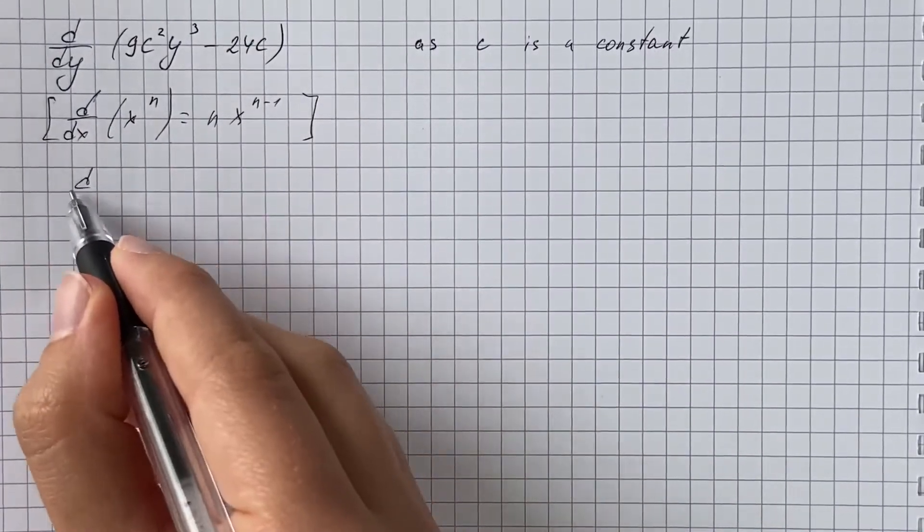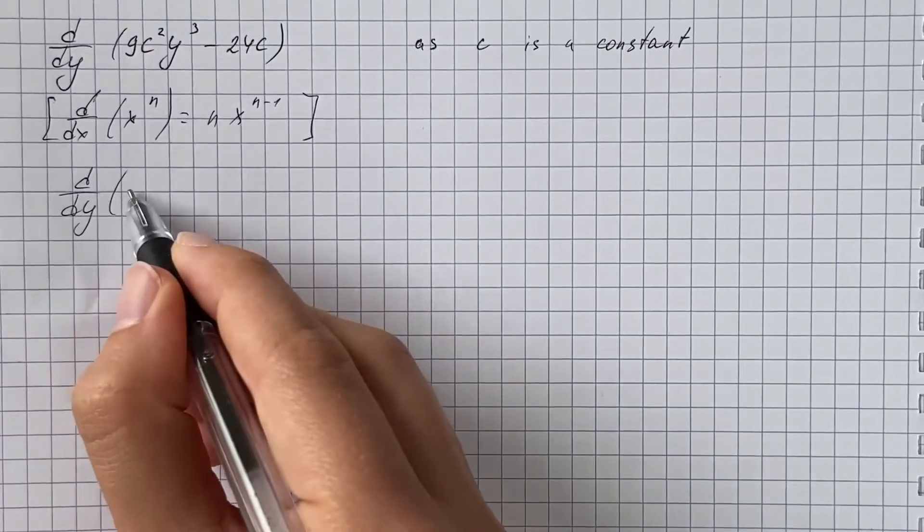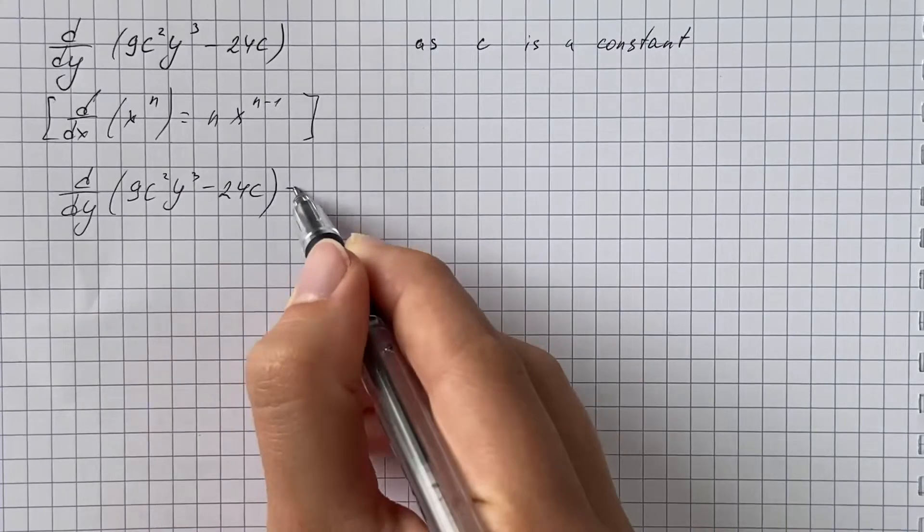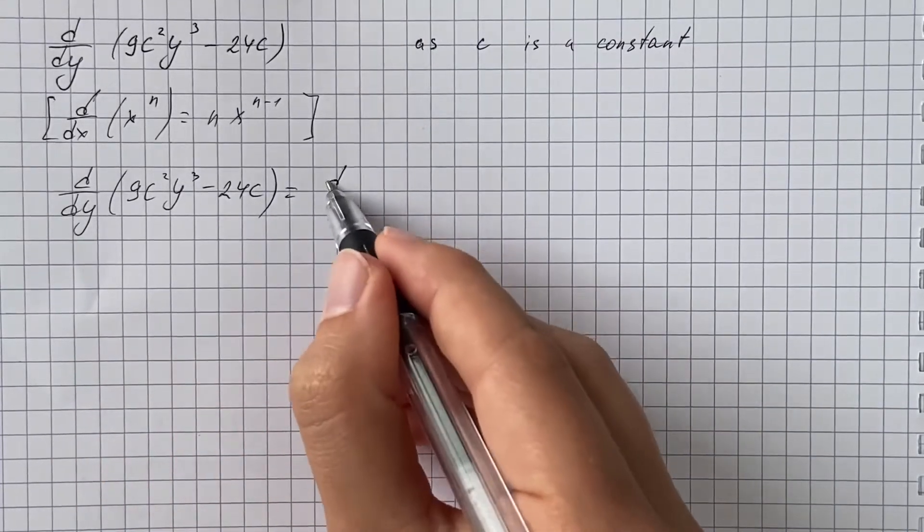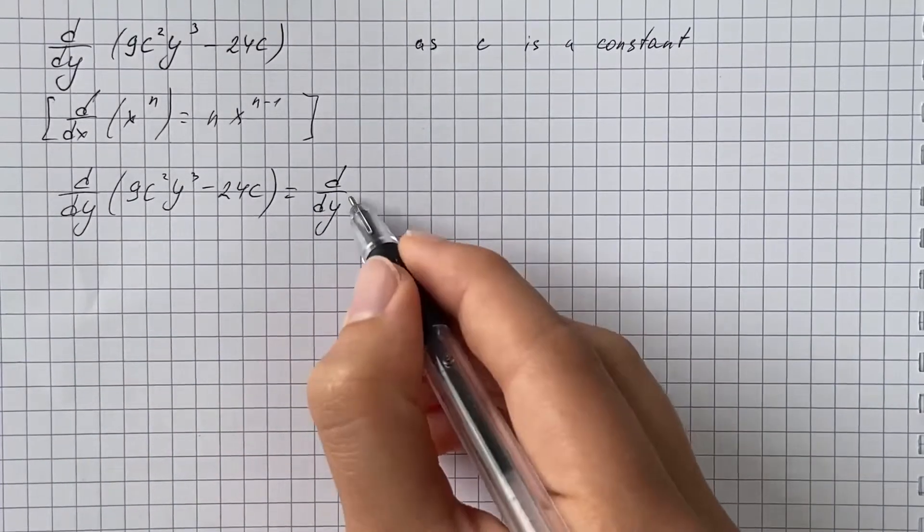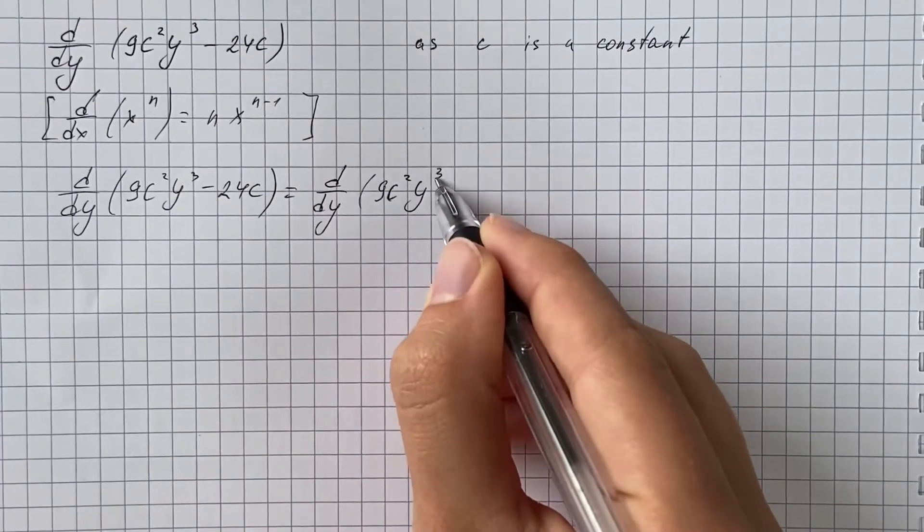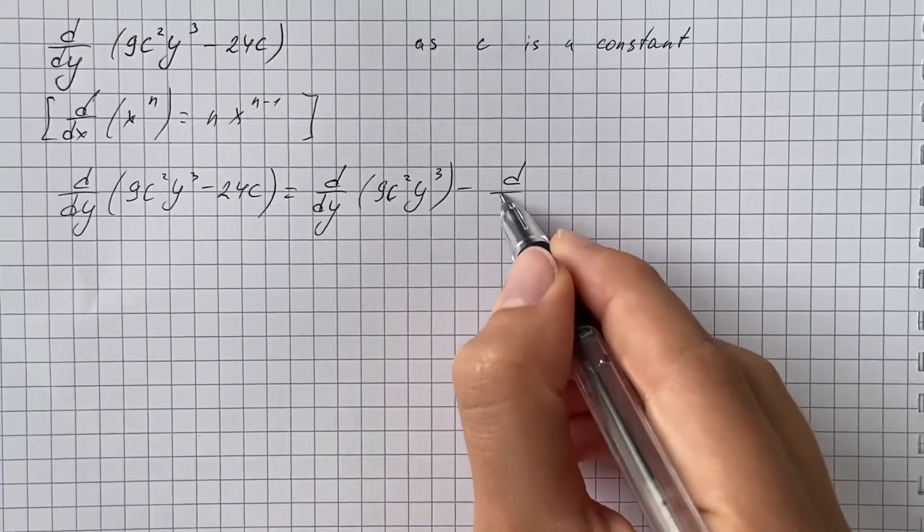So now our derivative of 9c squared y cubed minus 24c - we can find derivative of first term and then subtract derivative of second term.